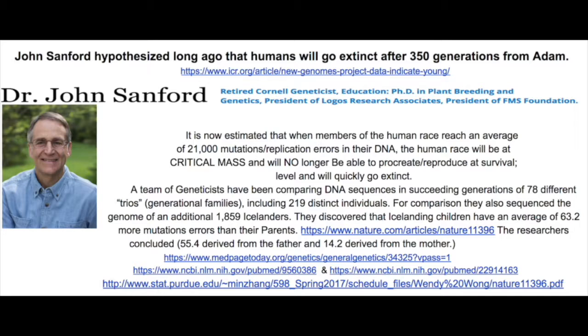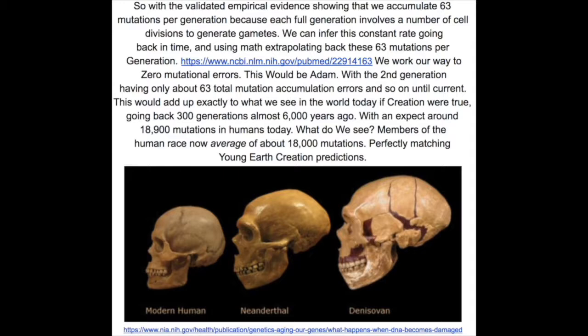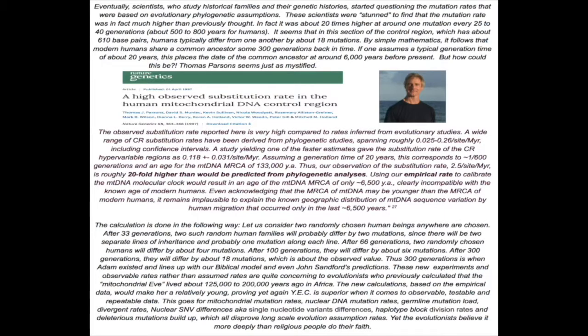Using 63.2 mutations per generation — the lowest end of the spectrum — the average human should then have 18,000 mutations built up if this was correct. Well, results confirmed 18,900 mutations on average, confirming why Chromosome Adam could not have lived more than 345 generations ago.